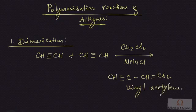Now, this vinyl acetylene is a useful product. It is a precursor for the generation of chloroprene.